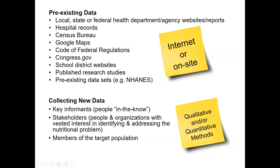Maybe you're going to talk to stakeholders — people or organizations with a vested interest in identifying and addressing the nutritional problem. Because they are interested in that problem, they may even have other evidence that gives you insights into your needs assessment. And probably the one used most often is actually talking to the target population themselves. With collecting new data, you can use qualitative and/or quantitative methods, which the next videos will cover more specifically.